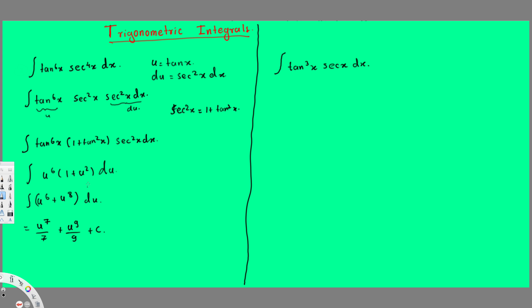Now all I have to do is substitute tan x back in for u. The final answer is tan⁷x/7 + tan⁹x/9 + C. That is the final answer for this question. Now let's do the next one.